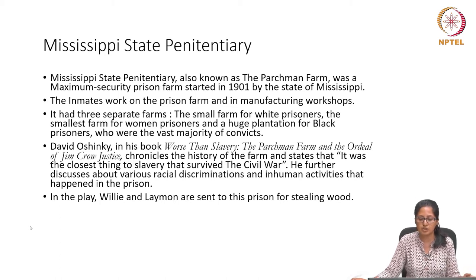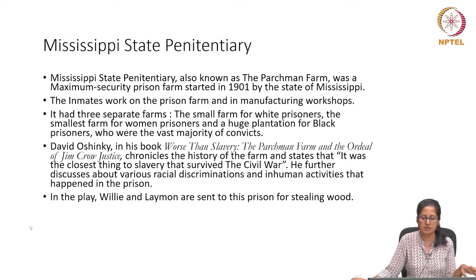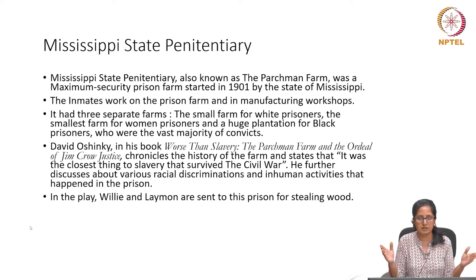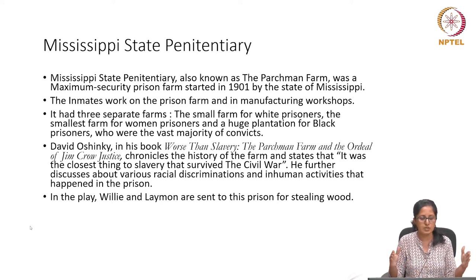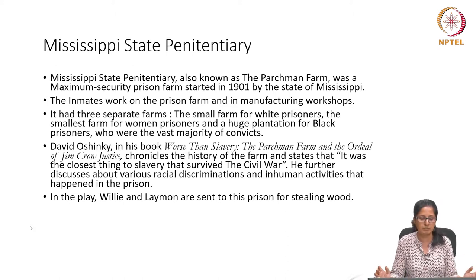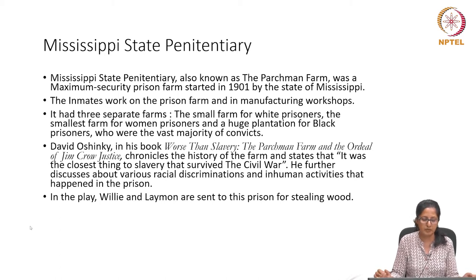This system was also known as the Parchman Farm — a maximum security prison farm started in 1901 by the state of Mississippi. Inmates worked on the prison farm and in manufacturing workshops. There were three separate farms: a small farm for white prisoners, the smallest one for women prisoners, and a huge plantation for black prisoners, who were of course the vast majority of the convicts.